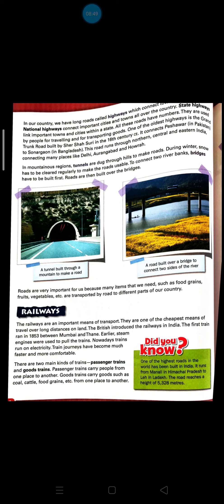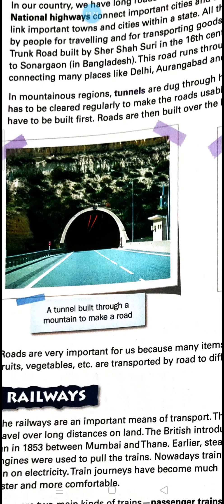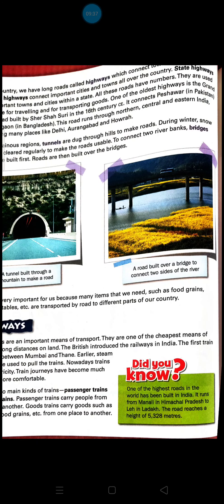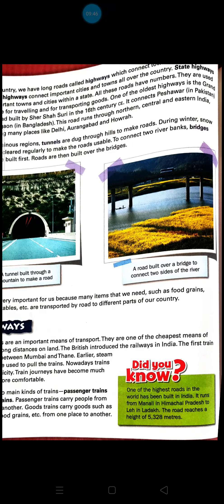In mountainous regions, tunnels are dug through hills to make roads. During winter, snow has to be cleared regularly to keep roads usable. To connect two river banks, bridges have to be built first, and then roads are built over the bridges. As you can see in the pictures, you can cut through mountains to make tunnels, or build bridges over water so people can travel easily.